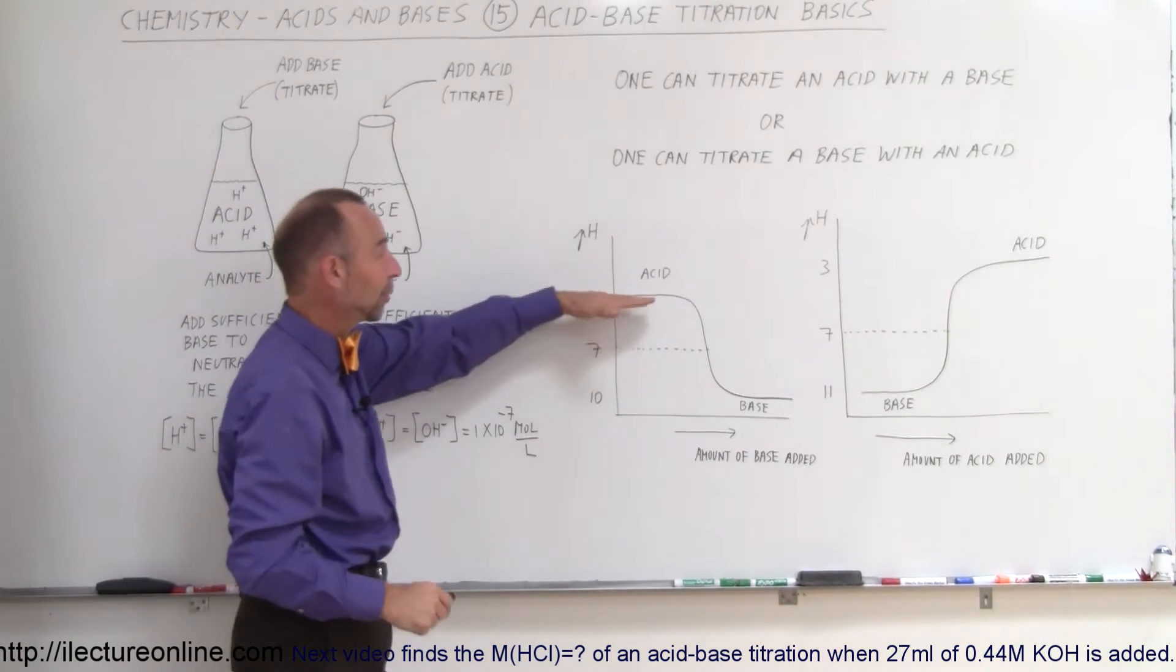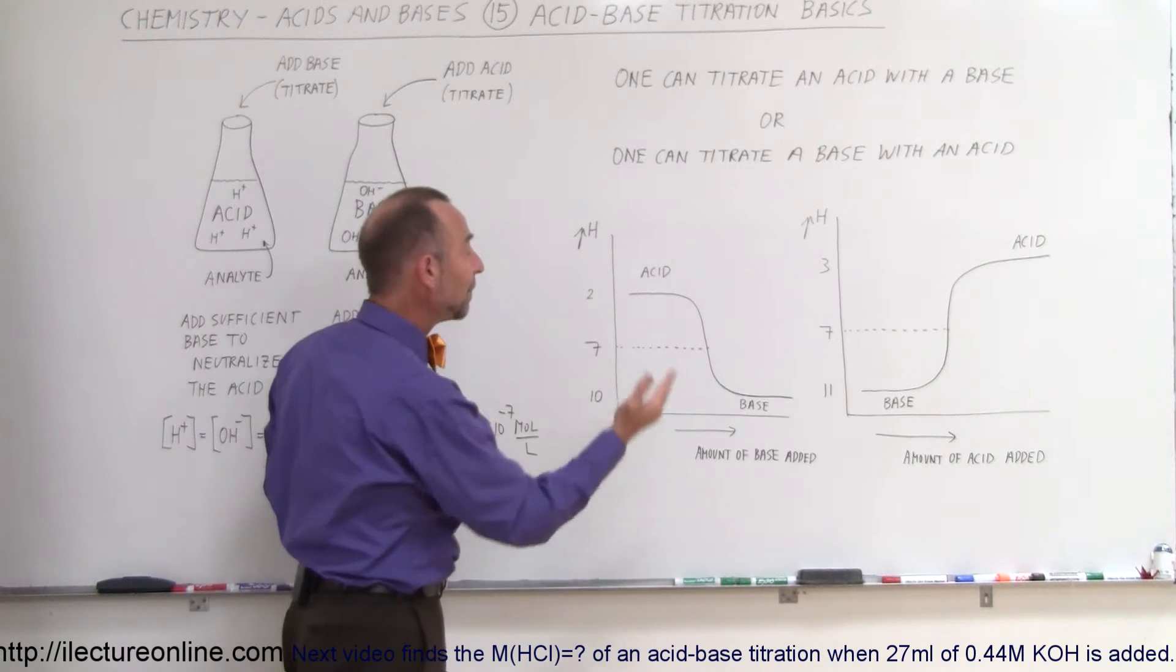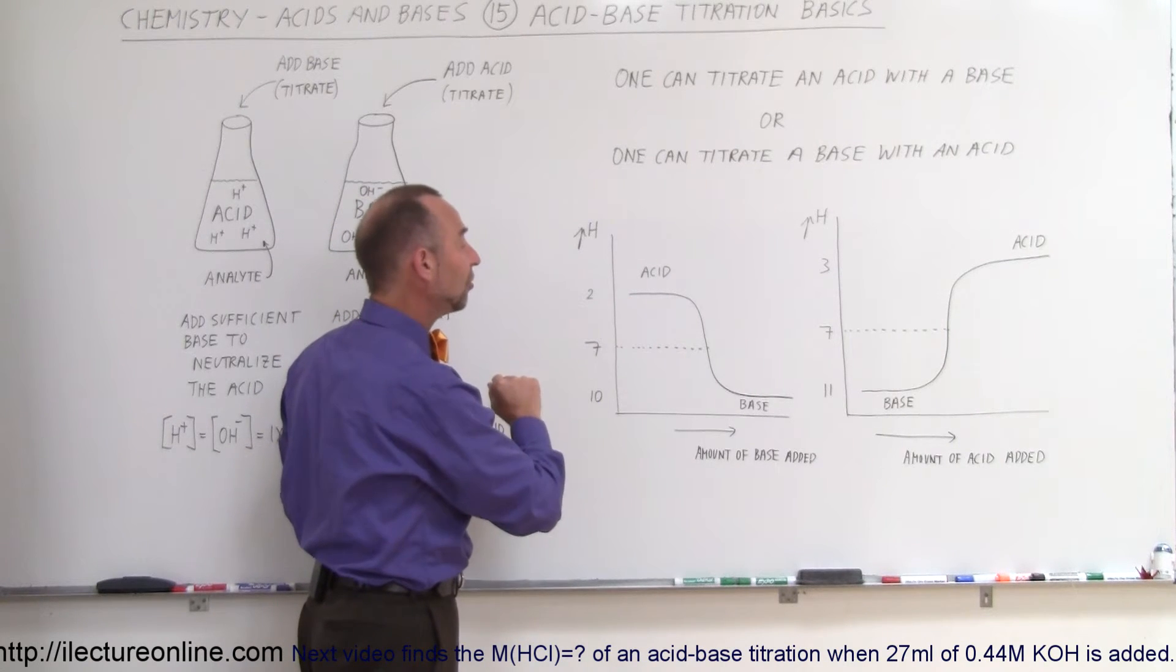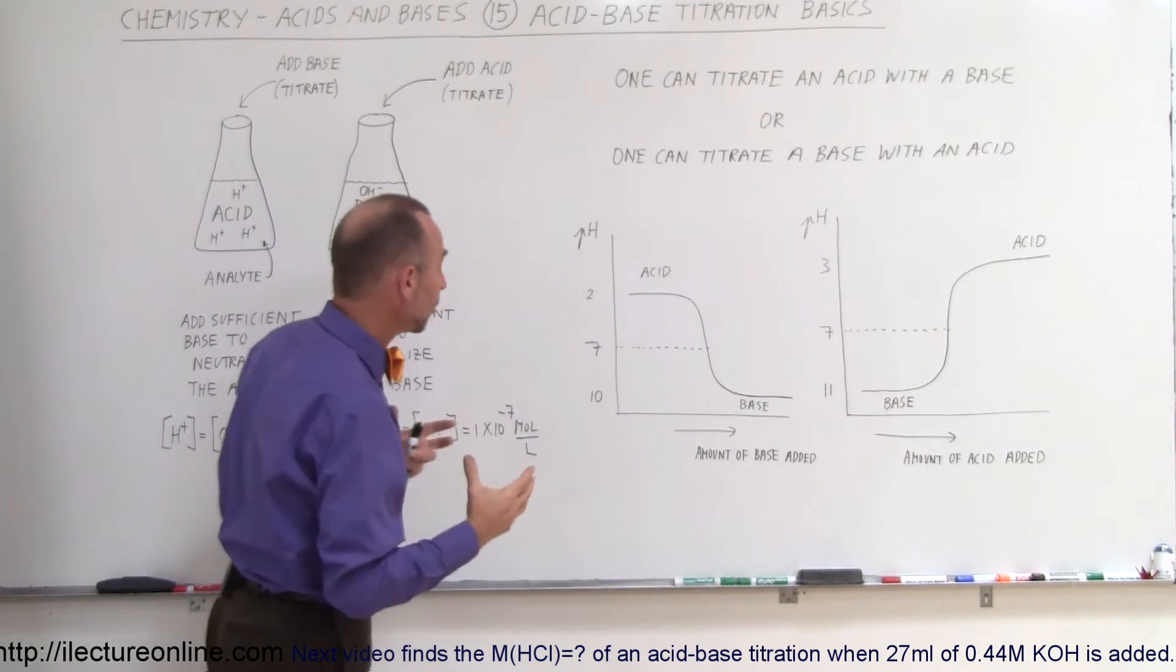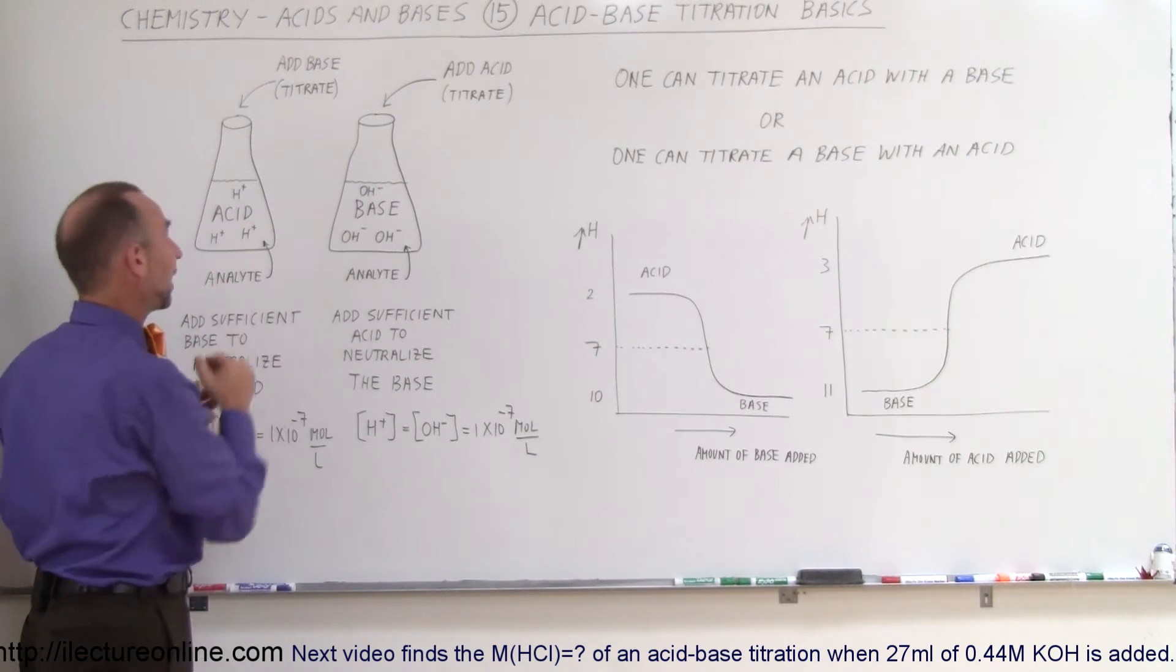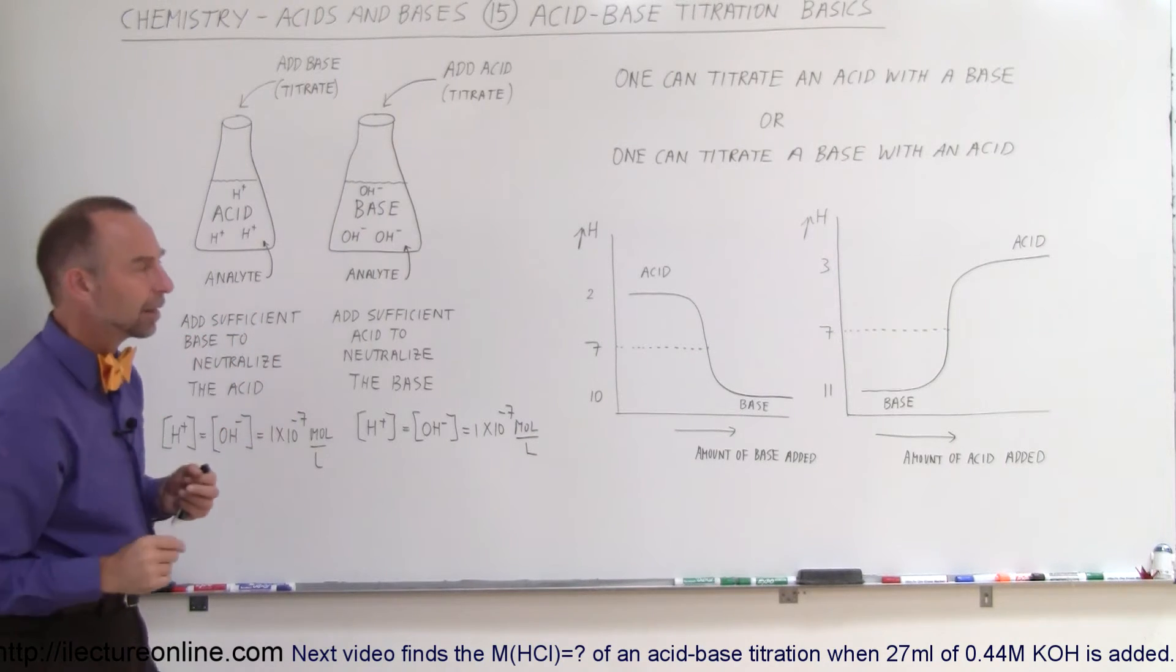Here we have a diagram of that. Let's say we start with acid at a pH of 2. We keep adding small drops of the base, called the titrate. Initially, you will not see much change because the excess concentration of hydrogen ions is so overwhelming that adding a few drops of base won't make much difference.